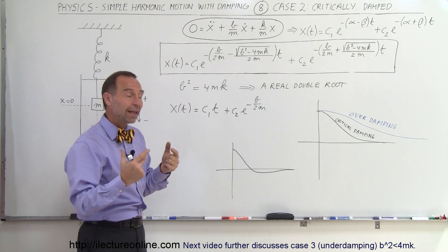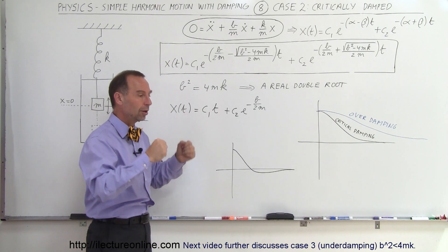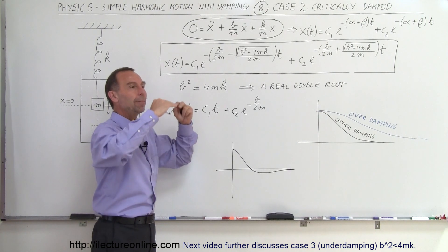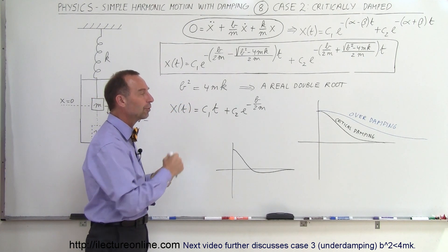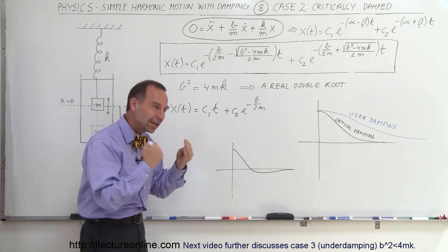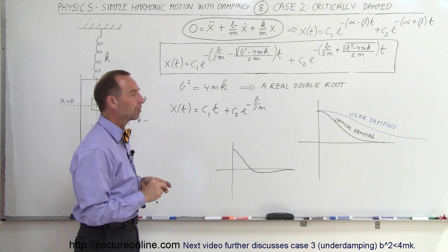Well, if you have overdamping, that means that the shocks are too strong for your car, too powerful for your car. You hit the bump, you bump up and then you very slowly go back to equilibrium so that the initial impact is very hard. That's overdamping.